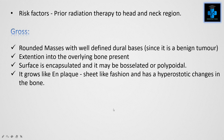The risk factors include prior radiation therapy to the head and neck region. Grossly, these are rounded masses with well-defined dural bases since it is a benign tumor, and extension into the overlying bone is present. The surface is encapsulated and it may be lobulated or polypoid. It grows in an en plaque, that is sheet-like fashion, and has hyperostotic changes in the bone.